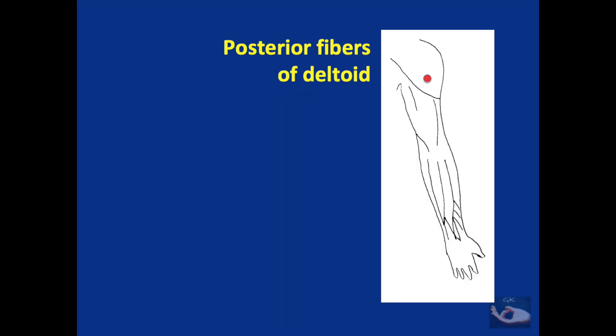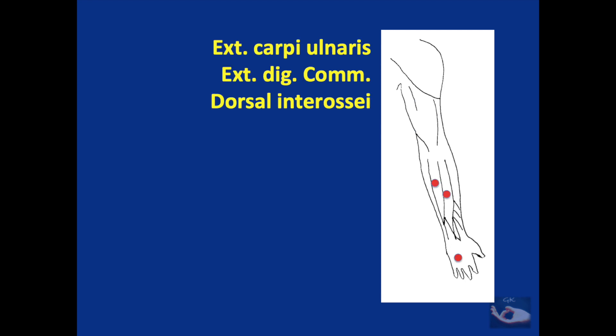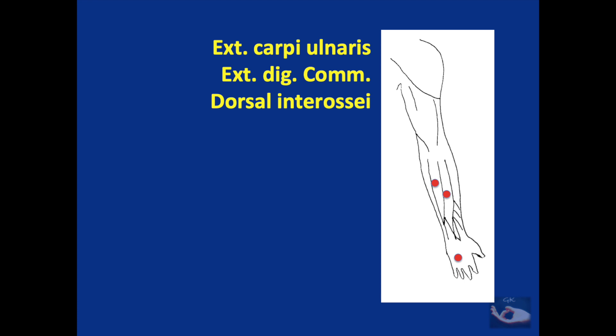On the posterior aspect of the upper limb, the muscle stimulation points are as follows: the posterior fibers of the deltoid; the triceps — consisting of the long head, lateral head, and medial head; the extensor carpi ulnaris, extensor digitorum communis, and dorsal interossei. The points for the abductor pollicis longus, extensor pollicis brevis, and extensor pollicis longus are more on the radial side of the distal forearm on the extensor aspect.